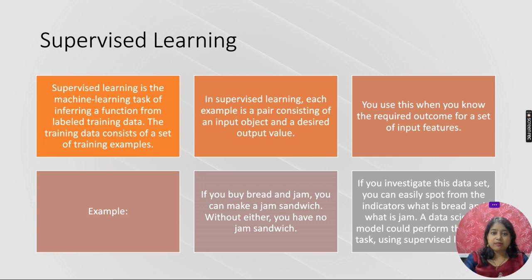In supervised learning, a pair consisting of an input object and we know the desired output. Based on the desired output, we can vary the input value. You can use this when we know the required outcome of a set of input features.